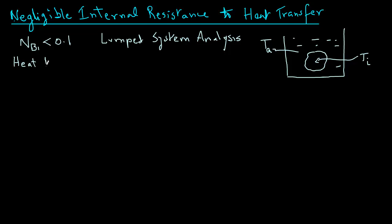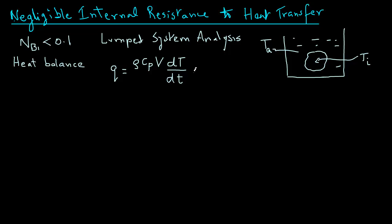Heat transfer will result in a change of the internal energy of this object. That change in internal energy, because of heat transferring from the surroundings, will equal density rho times specific heat Cp, times the volume of this object, times dT — where uppercase T represents temperature — divided by dt, which refers to time. This quantity tells us how the internal energy of this object is changing because of heat transferring into the object.